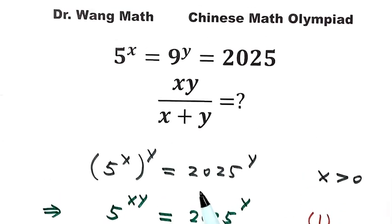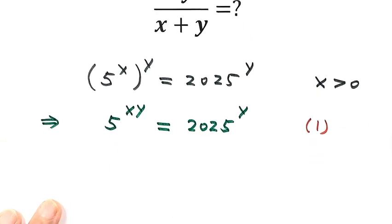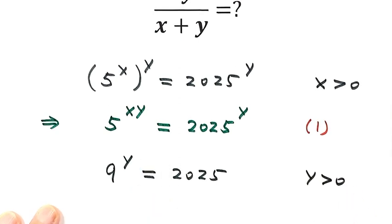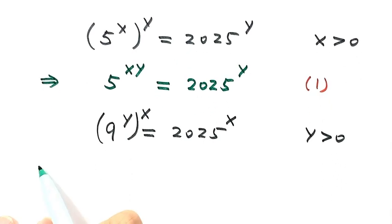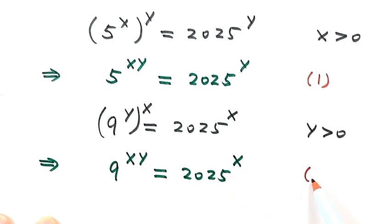Next, we can use this condition: 9 to the power y equals 2025. Because 9 to the power of y equals 2025, that means y is bigger than 0. Because we need x times y, both sides are raised to the power of x. Then simplifying the left-hand side, the two exponents multiply together, giving us 9 to the power of x times y, which equals 2025 to the power of x. We label this one as equation 2.